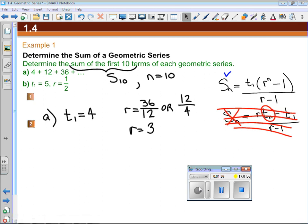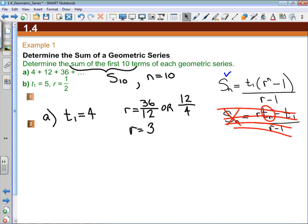Okay, sorry about that important call. So we know the first term, we know the common ratio, and we know the number of terms. All we're really going to do here is substitute: t₁ equals 4, r equals 3, and n equals 10.